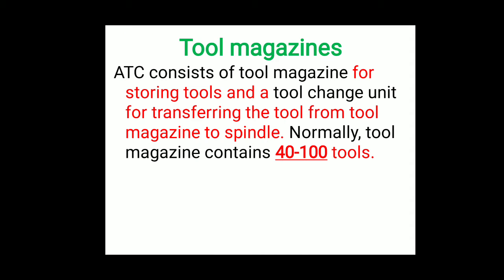The next part is tool magazines. A tool magazine is a tool storage unit where we can store the required number of tools for a particular operation. Tool magazines are more commonly found on machining centers because many operations are performed from all sides of the workpiece in one setup, requiring a large variety of tools. ATC consists of a tool magazine and a tool change unit for transferring tools from the magazine to the spindle; normally it contains 40 to 100 tools.